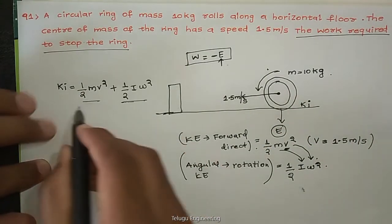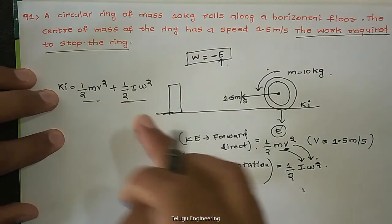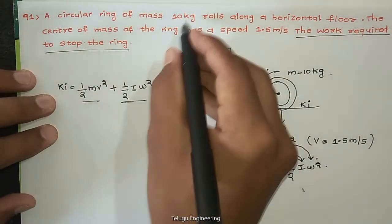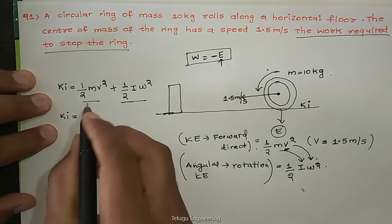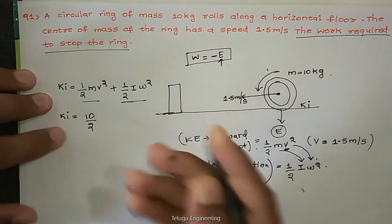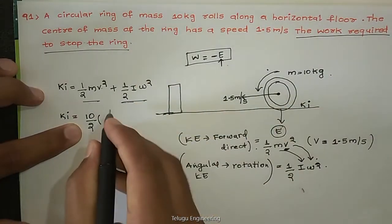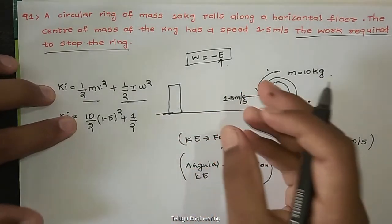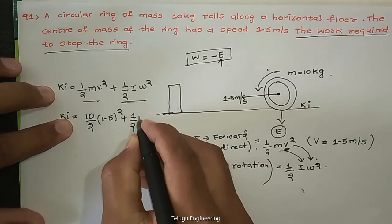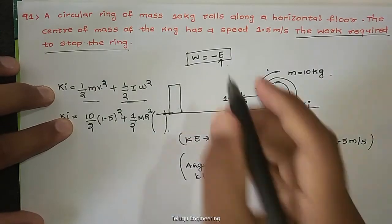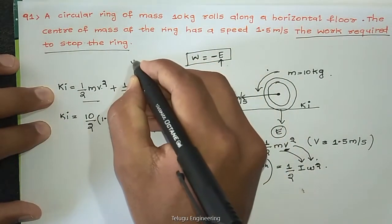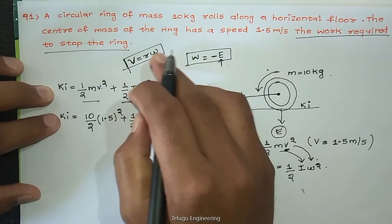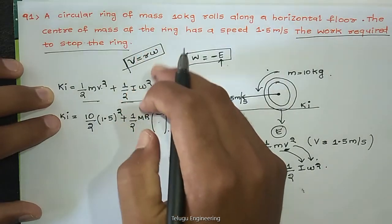So the initial kinetic energy Ki equals half mv squared plus half I omega squared. For a circular ring, the moment of inertia I equals MR squared. Also, from rolling without slipping, v equals R omega, so omega squared equals v squared by R squared. Substituting, the R squared in I and omega squared cancel each other out.